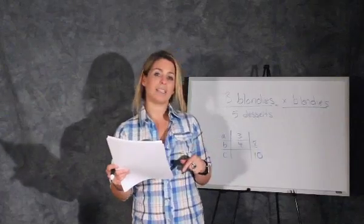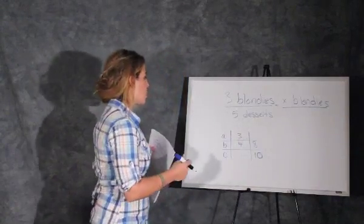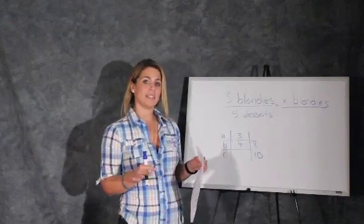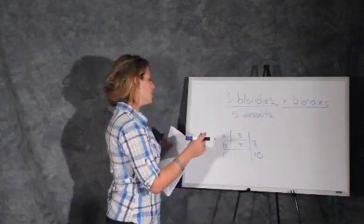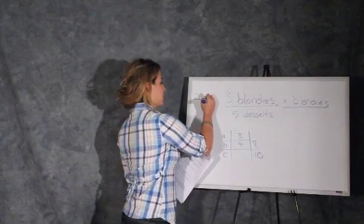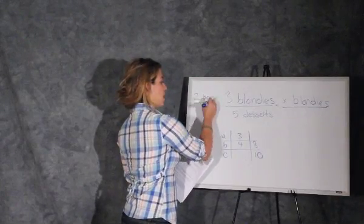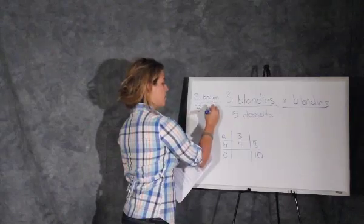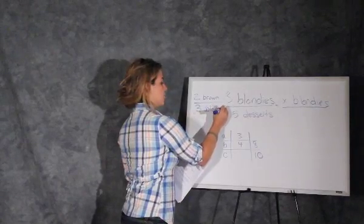how many blondies are there? So basically, we have to pause a little because there's a lot of information here and they're telling us that there's two brownies for every three blondies in this dessert tray.